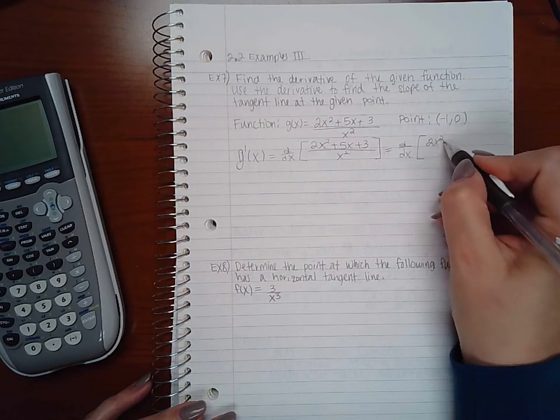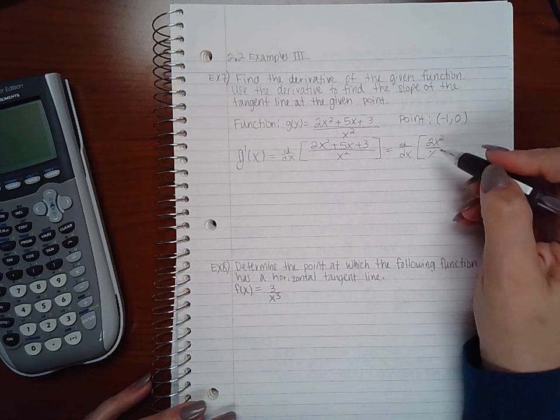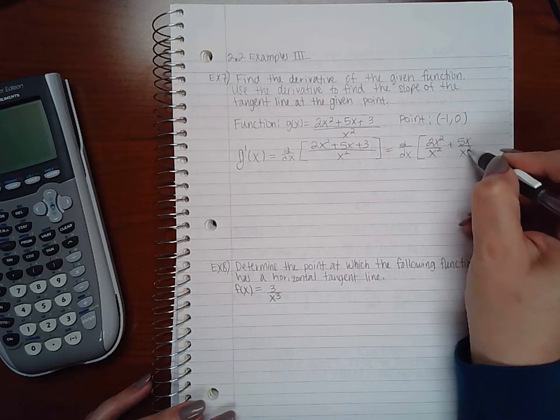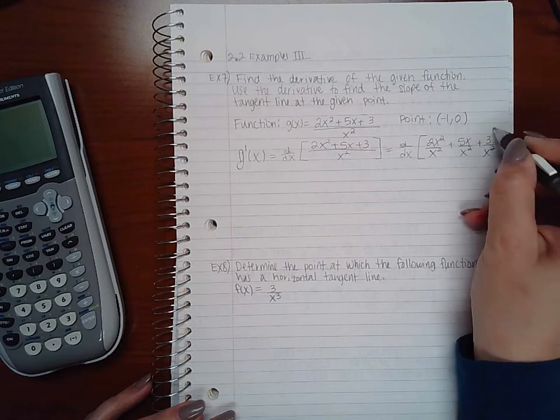So I'm going to have 2x squared over x squared plus 5x over x squared plus 3 over x squared.